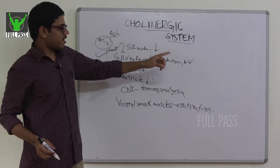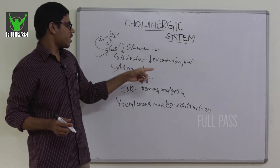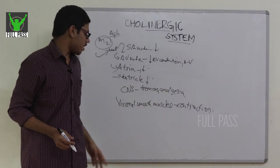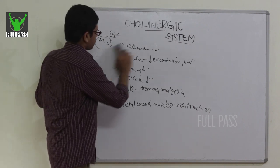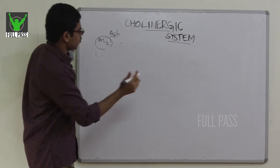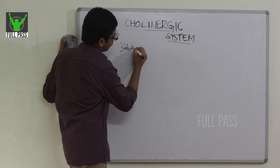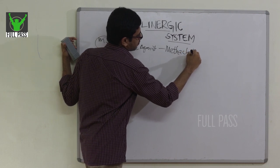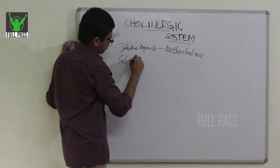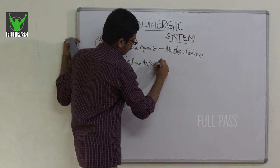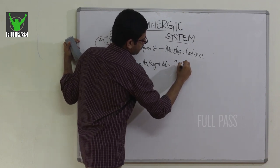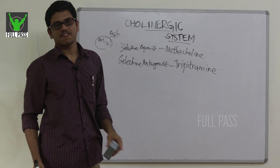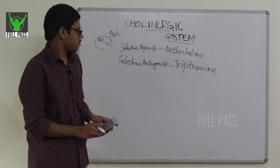In summary, M2 is an inhibitory cycle causing bradycardia, decreased AV conduction, decreased contractility of atria and ventricles, tremors and analgesia in the CNS, and contraction of visceral smooth muscles. The selective agonist for M2 is methacholine and the selective antagonist is tripitramine.